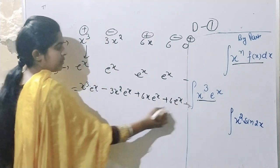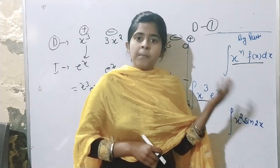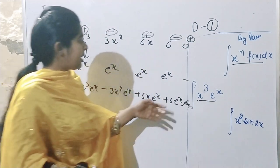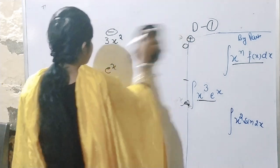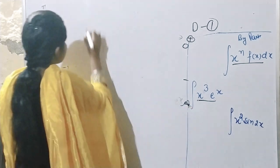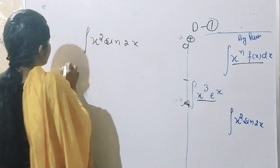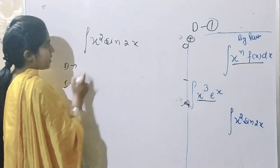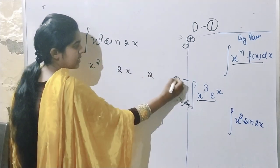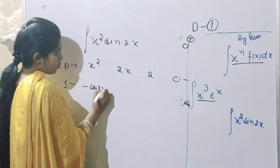That will be your final answer. This is a very easy way to do integration by-parts. This is an easy shortcut trick — method 2.